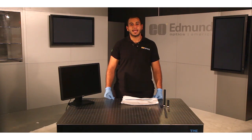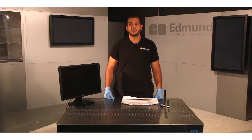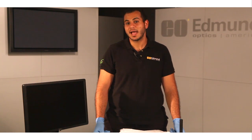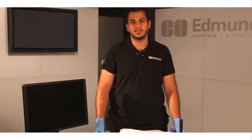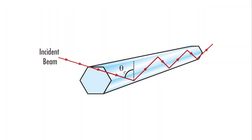Light pipes accept a cone of light and can be made into two different configurations: as a mirror tube with a hollowed center, or as a transparent material. Hollowed designs have reflective sidewalls to channel input light, whereas solid material configurations can be made out of glass, plastic, or crystalline material, and use total internal reflection to channel the light to the output end.